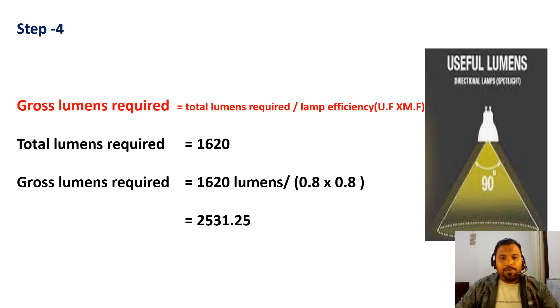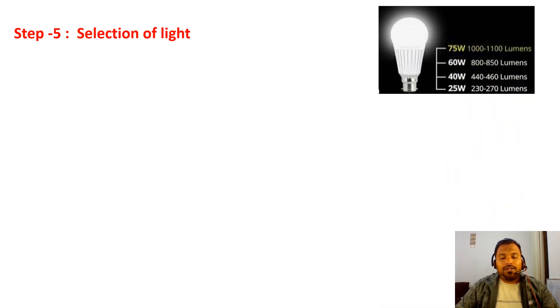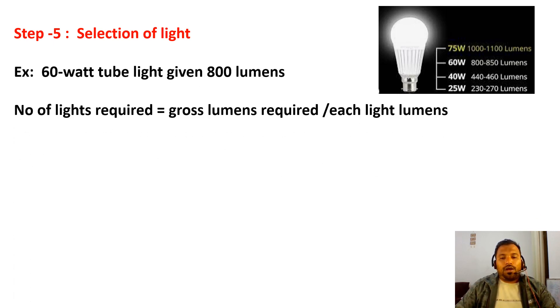Step 5 is selection of light. Different lights are available in the market. For example, 25 watt produces 230 to 270 lumens, 40 watts produces 440 to 460, 60 watt produces 800 to 850 lumens, and 75 watt produces 1100 lumens. I'll go for the efficient way - 60 watts which produces 800 lumens. So how many lights are required for this particular room?